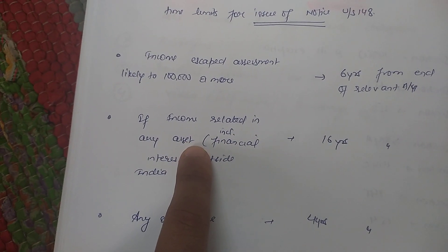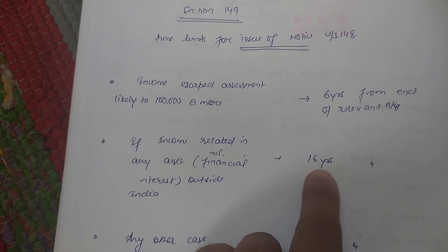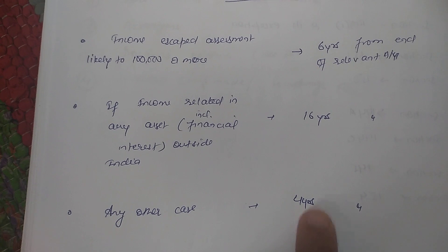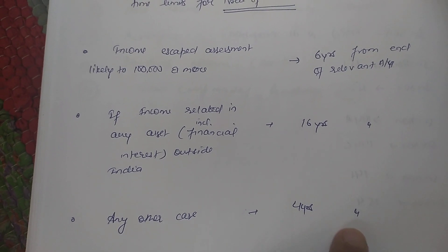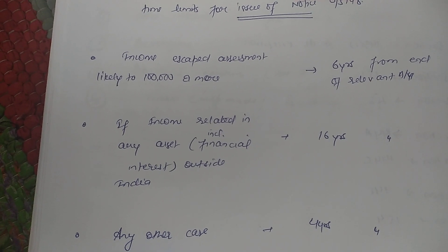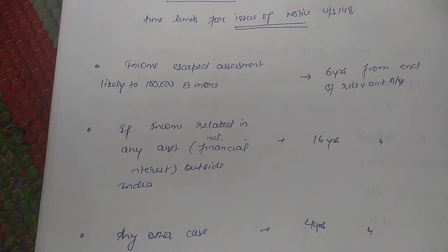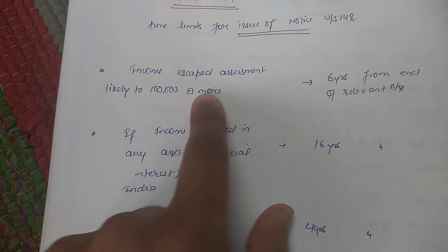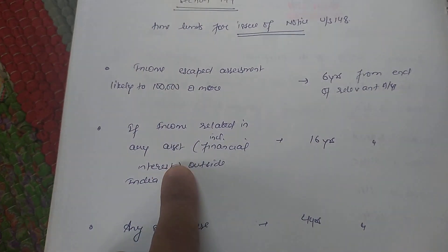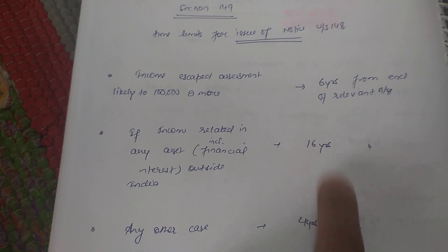If income escaped relates to any asset including financial interest located outside India, then the AO can issue notice under Section 148 till 16 years from the end of the relevant assessment year. In rest of the cases, the AO can issue notice under Section 148 within 6 years from end of the relevant assessment year — whether or not assessment has already been done.